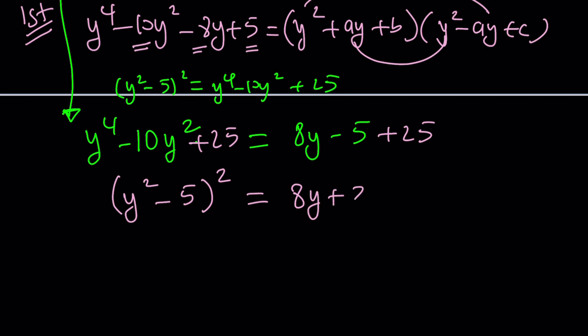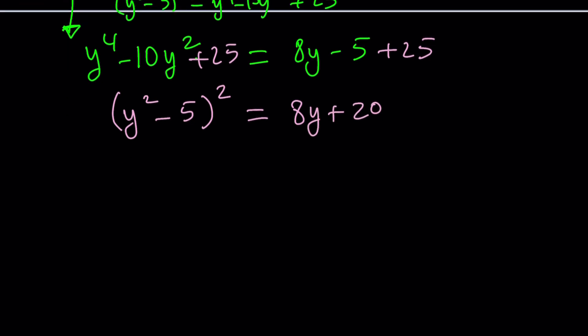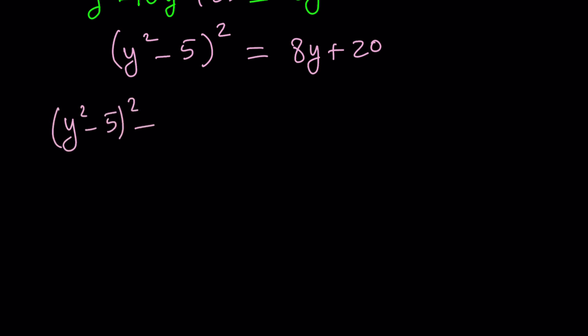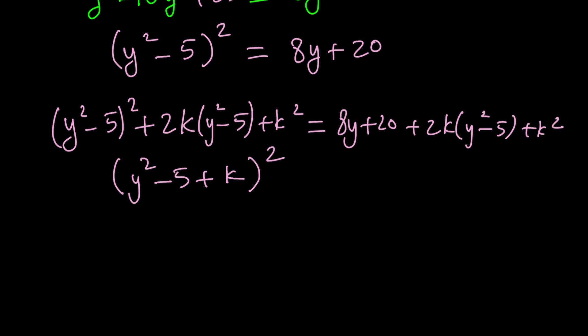At the same time, you want the right hand side to be a perfect square. How do we achieve that? Well, we could actually do this trick one more time. Like what should I add to this? I'm going to be adding 2k times y squared minus 5 plus k squared. Notice that this is going to make it y squared minus 5 plus k quantity squared, which is another perfect square. And that's also going to make the right hand side a perfect square, because we have 8y plus 20, and we're adding 2k times y squared minus 5 plus k squared. Now if you rearrange the right hand side, you're going to get 2ky squared plus 8y—we're going to write it as a quadratic in y—and then plus 20 minus 10k plus k squared.